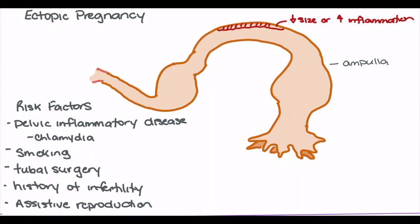An example of tubal surgery that can increase the chance of ectopic pregnancy is tubal ligation. Tubal ligation is often performed as a contraceptive surgery that aims to prevent sperm travel to the fertilization zone and prevent egg travel toward the sperm. However, in the rare chance that sperm can bypass the tubal ligation, the egg can be fertilized, and because the blastocyst will be unlikely to pass the ligation, implantation in the ampulla is much more likely.